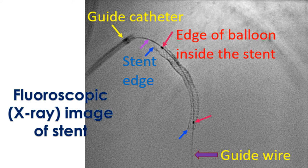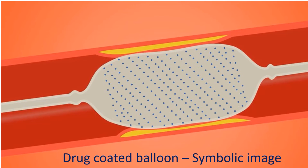Drug coating of the drug eluting stents is meant for prevention of this undue growth of cells within them. Stent thrombosis can be catastrophic if an important blood vessel of the heart is affected.